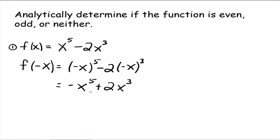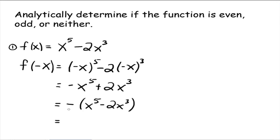We ask ourselves: is this the same thing we started with? No, therefore the function is not even. To determine if it's odd, factor a negative 1 out of all the terms. Is the expression in parentheses the same thing we started with? Yes, it is. So this becomes negative f of x. The math tells us that f of negative x equals negative f of x, therefore this function is odd.